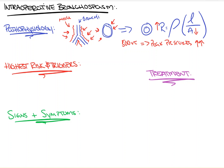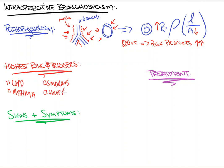This can result in many problems, including inability to oxygenate, ventilate, and remove CO2. We can also get increased mucus production and inflammation as a result of this pathophysiology. In the OR, this is most commonly seen in our COPD patients, our asthma patients, our smokers, and our patients with a history of reactive airways.